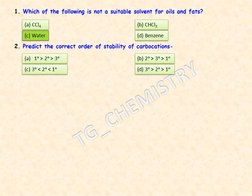The second question: predict the correct order of stability of carbocations. Carbocations, carbanions, and radicals are very important in answering questions. We know that tertiary carbocations are the most stable and primary are the least stable. So the correct answer is option D: 3° > 2° > 1°.